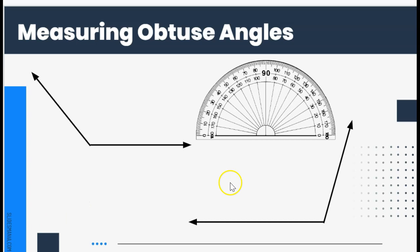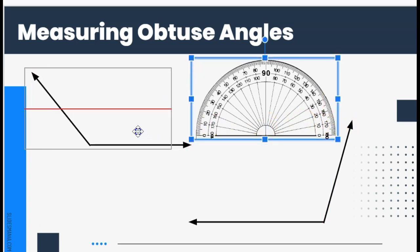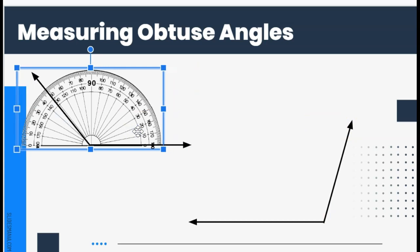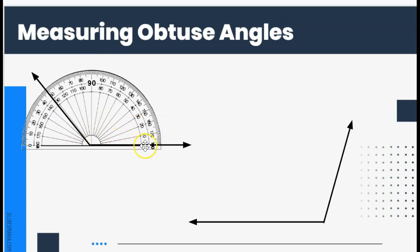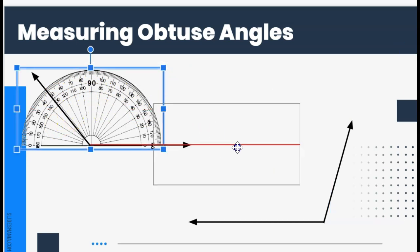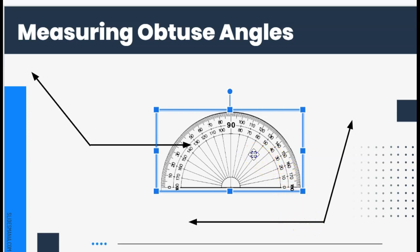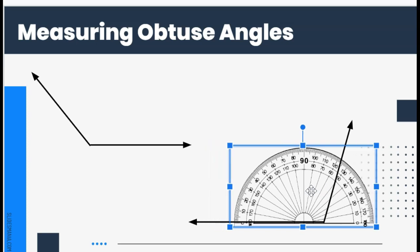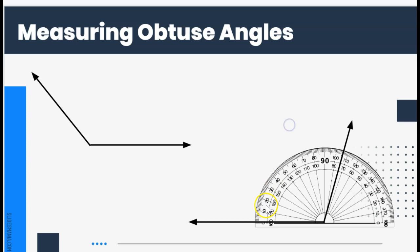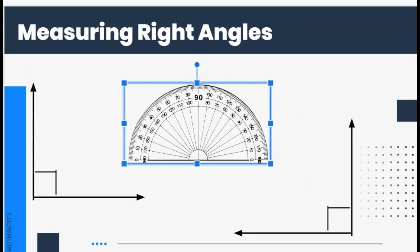Let's look at how to measure an obtuse angle — remember, that is an angle greater than 90 degrees. I place my protractor over the angle, making sure the two lines on the protractor meet at the vertex. If the angle is facing this direction, I use the inside numbers, and it measures at about 132 degrees. If the angle opens in the other direction, I use the outside numbers and it measures at about 106 degrees.